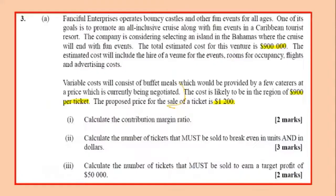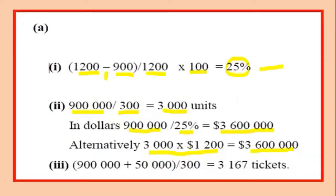The next part asks for a target profit — how many tickets must be sold to make a target profit of 50,000. To get a target profit, you take the fixed cost, add on the target profit, and divide by the contribution per unit. That gives us 3,167 tickets. That takes care of this part.